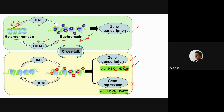We also have to understand that there are four different histones, two copies in each nucleosome, and there are different positions of lysines, arginines, and serines to which you can have combinations of phosphorylation.